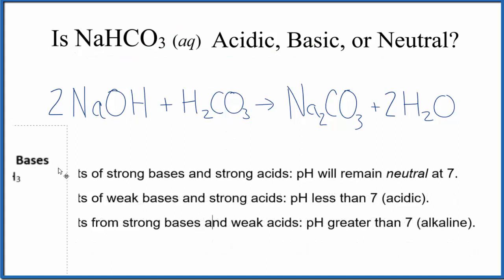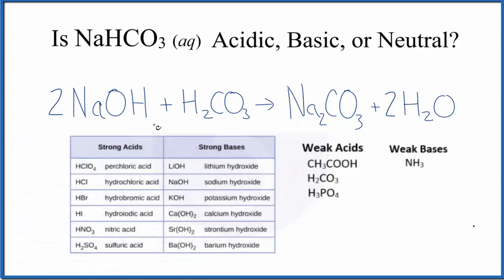So this table here might help us. Sodium hydroxide, that is a strong base. So sodium hydroxide, strong base. Carbonic acid, not on our list of strong acids. So that's going to be a weak acid, and in fact, it's one that you probably should memorize. So carbonic acid here, weak acid.